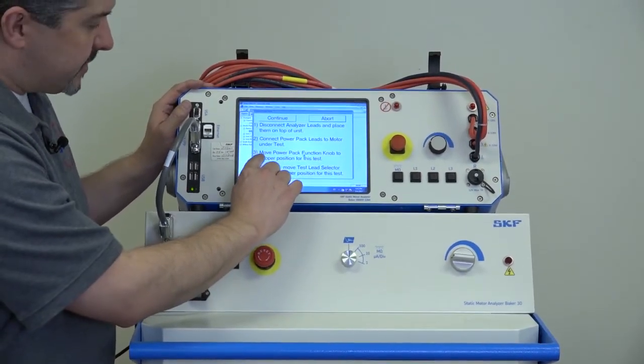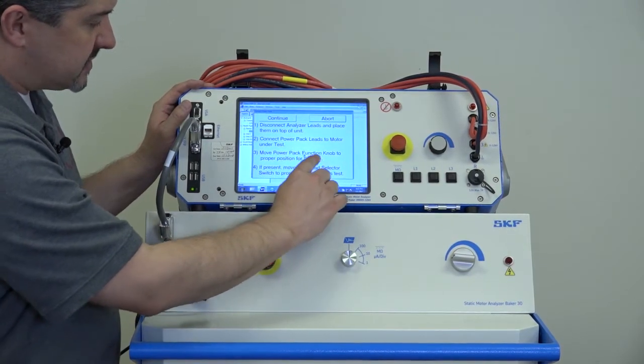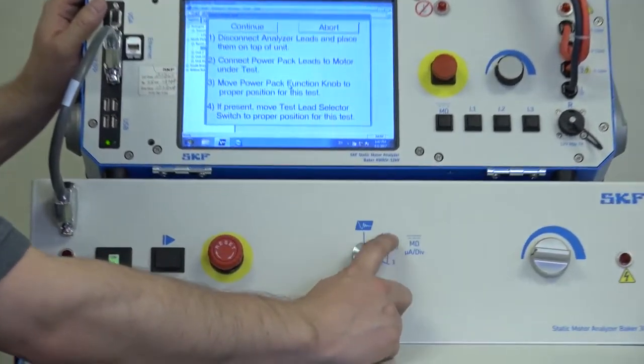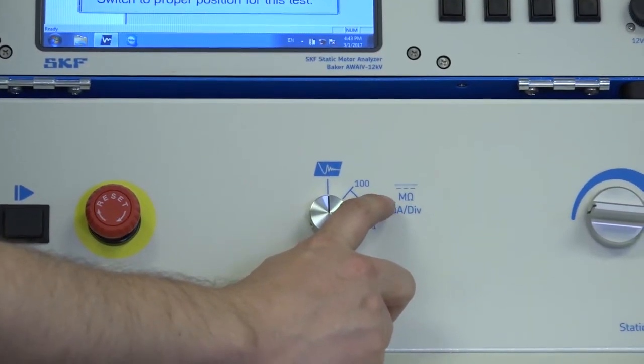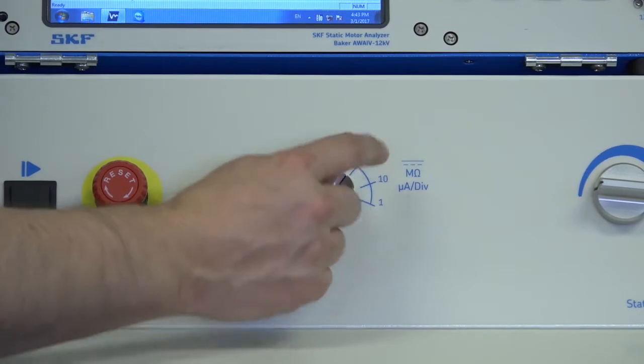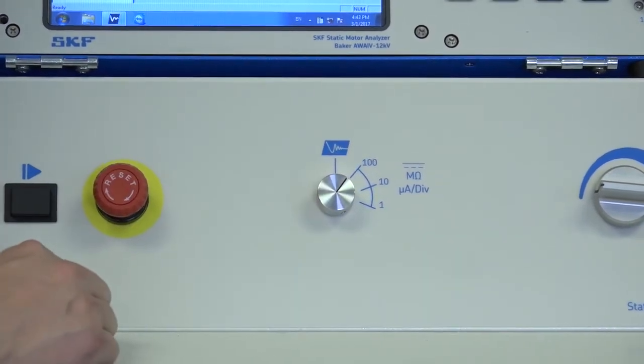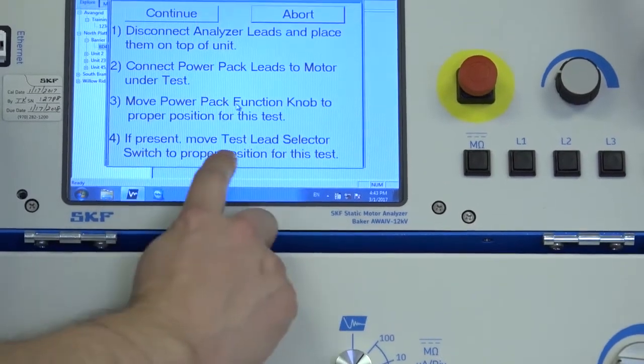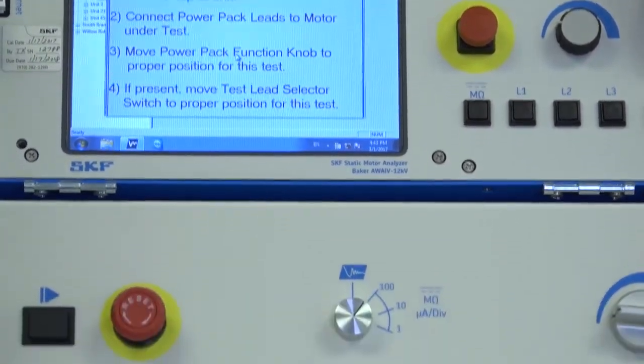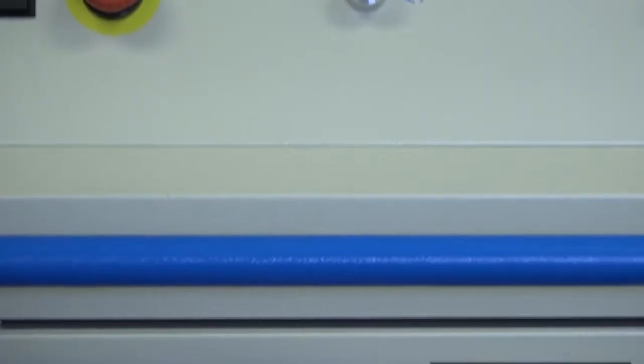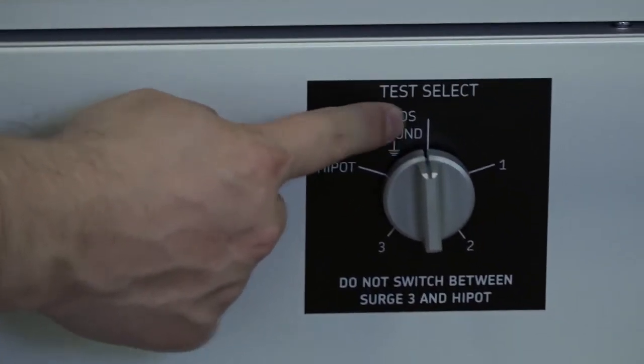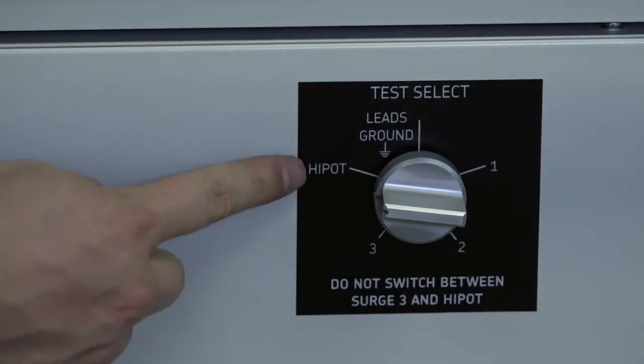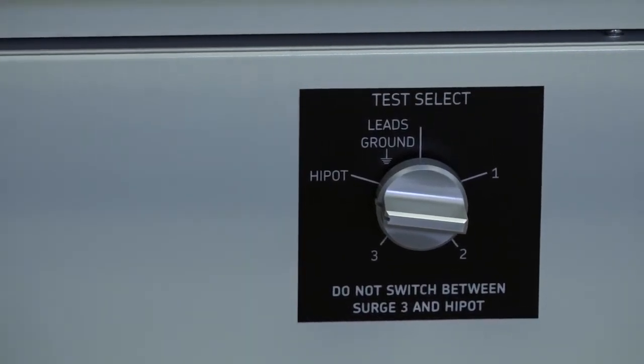Step three, move the PowerPak function knob to the proper position for this test. So since we're doing a high pot test, we have three positions for high pot: the 10 microamp setting per division, 10 and 1, and we always start on the highest, on the 100 microamp per division setting. Step four, if present, move the test lead selector switch to the proper position for this test. Down here, the lead selector switch, which should normally be placed in leads ground position, we'll turn that counterclockwise to the high pot position, and now we're ready to initiate the test.